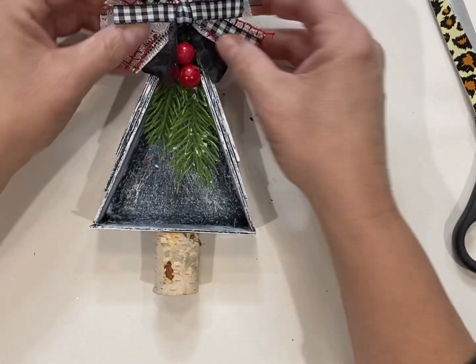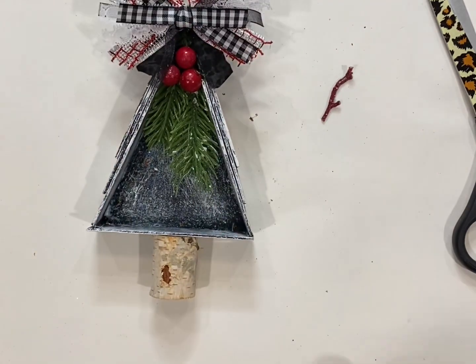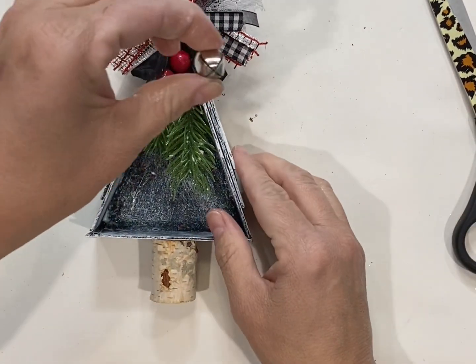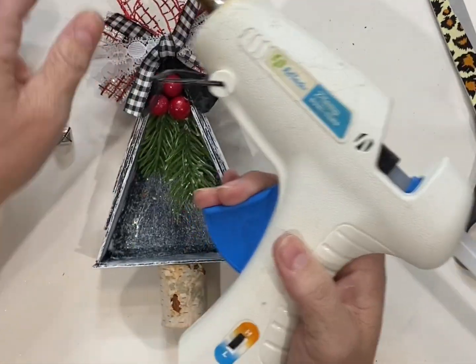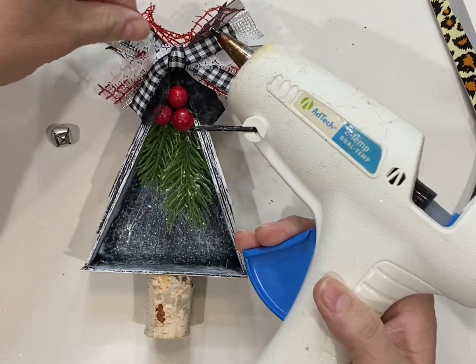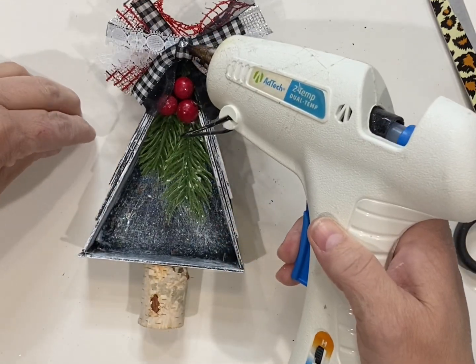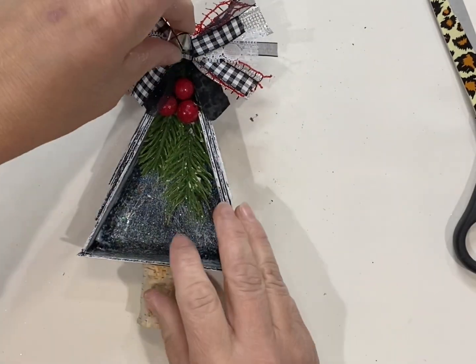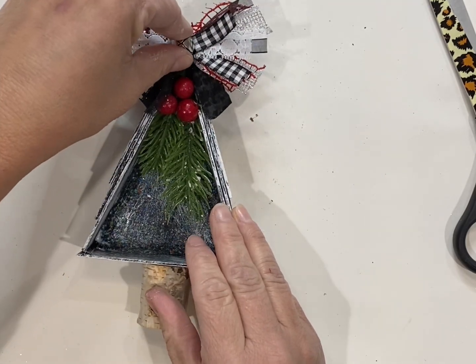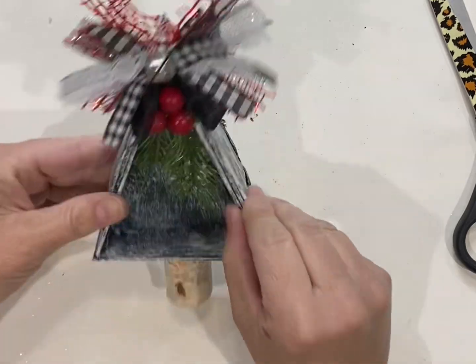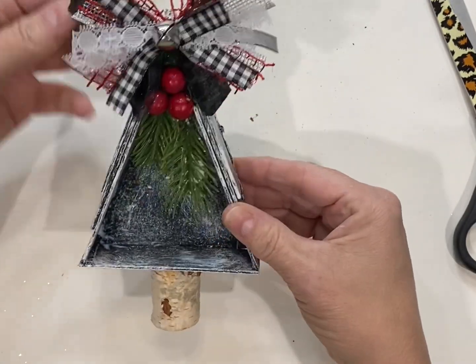You'll be able to see the full thing in just a second. Now I'm gonna take a little jingle bell that I have and put that right in the center of the bow. Just use any kind of embellishments you have. I'm gonna glue that right there in the center.